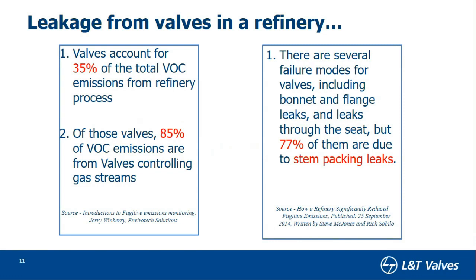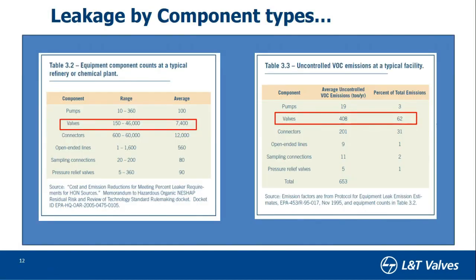The body-bonnet joint or body-cover joint is a static joint, whereas the gland packing is a dynamic joint. It has been found that 77% of the leakage from valves is attributed to stem packing — this is obvious because it is dynamic. If you take a control valve, the leakage will be much more because it is used quite often and at intermediate positions too. Leakage by component type in a typical refinery shows that valves are the major contributor, next to pipe fitting connectors.